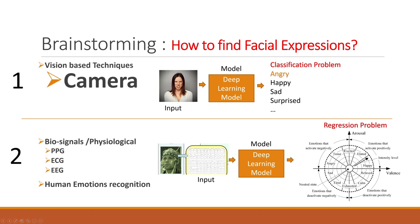The question is: how do we find facial expressions? Broadly speaking, we can divide facial expression recognition into two techniques. One is camera-based, in which we take a front-facing image, detect a face, and train a deep learning architecture to classify it — for example, as happy, sad, or other categories. The other technique is physiological or biosignal-based.